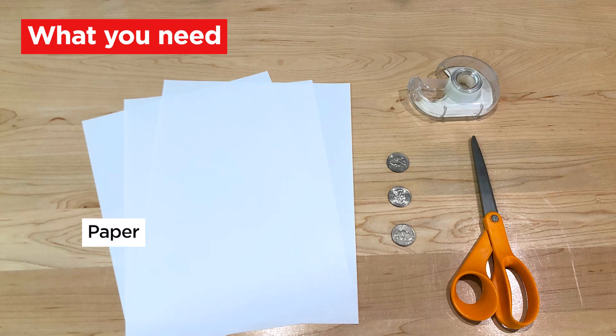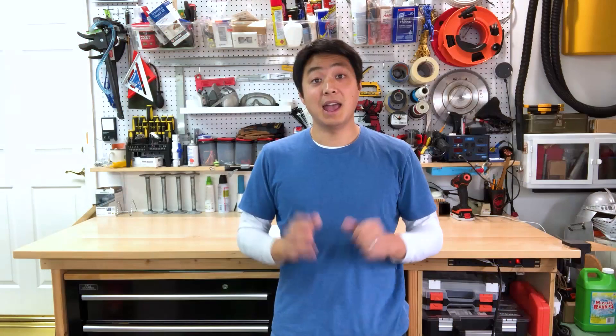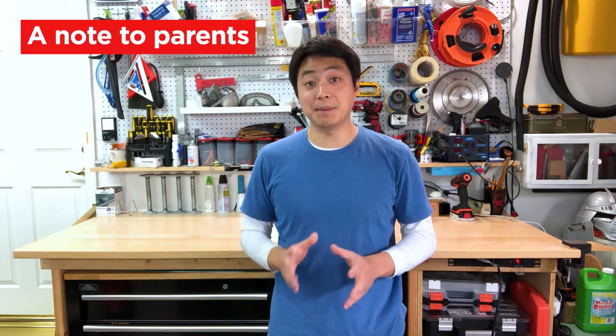But before we begin, adults, here's what the kids are going to need. Paper, quarters, scissors, tape, and a wall that's safe for them to tape their tracks onto.